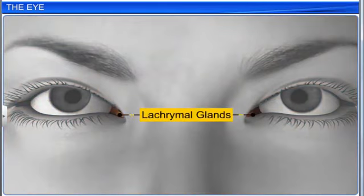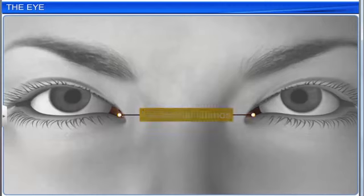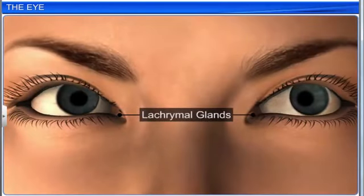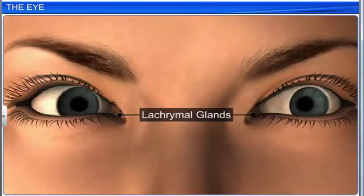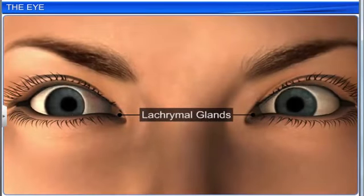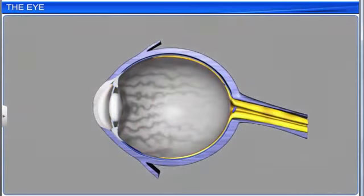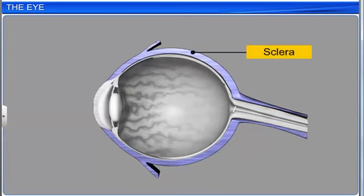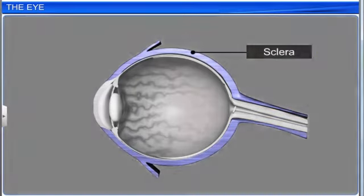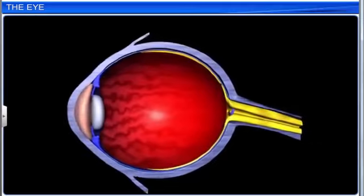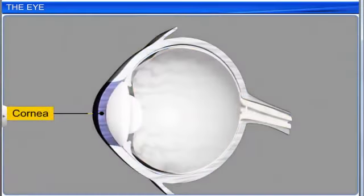The lacrimal glands secrete an aqueous solution that lubricates the eyes and helps rotate the eyeballs freely. The wall of the human eye is composed of three layers. The external layer, or sclera, is made of dense connective tissue. The anterior portion of the sclera is the cornea.